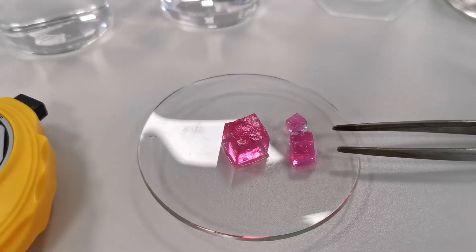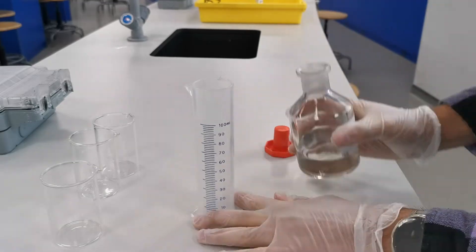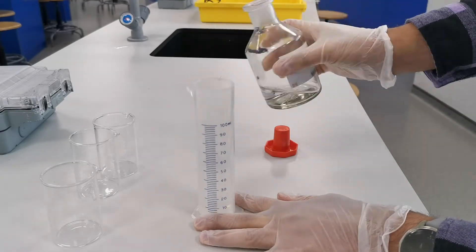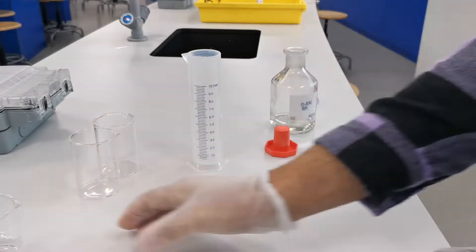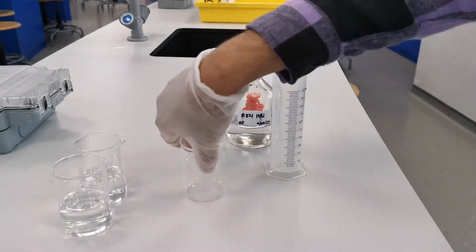To demonstrate this concept we're going to immerse these agar cubes into dilute hydrofluoric acid. The phenolphthalein mixed into the agar is a pH indicator that goes colourless in acidic conditions.